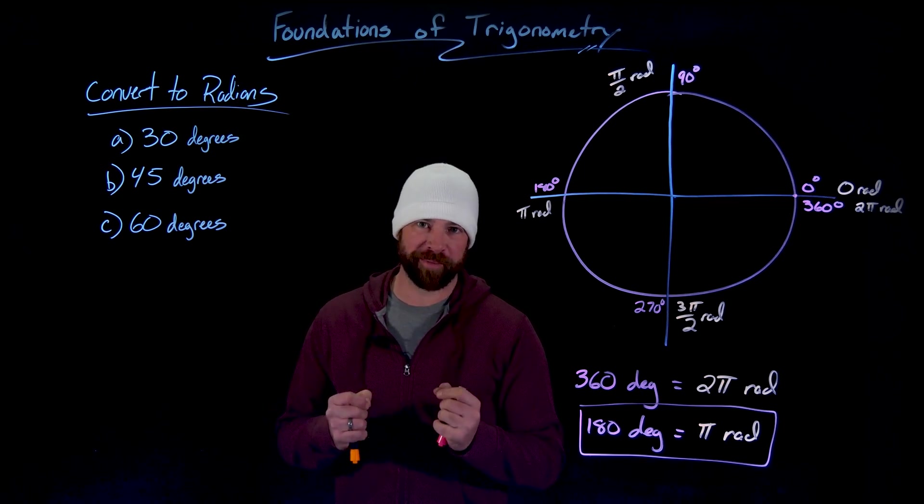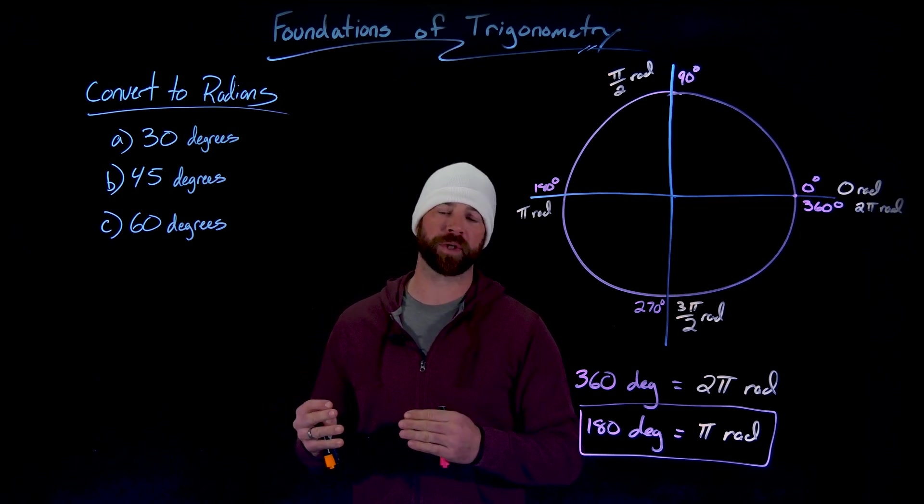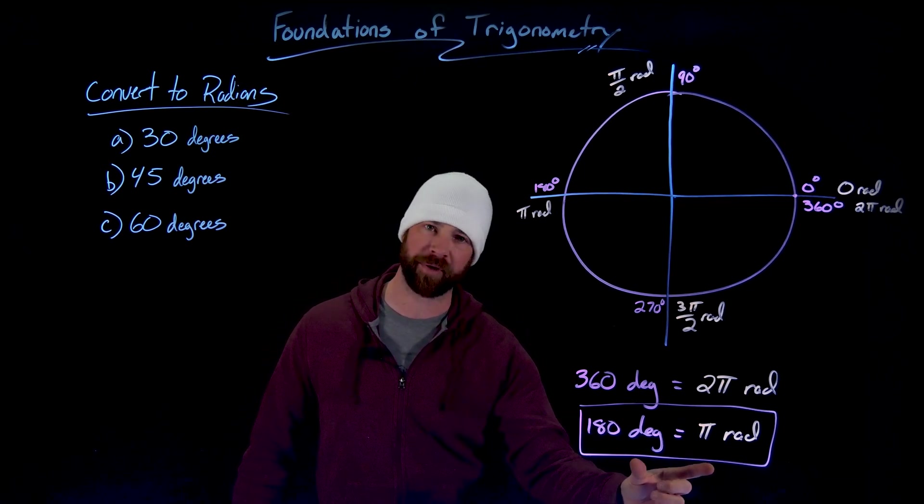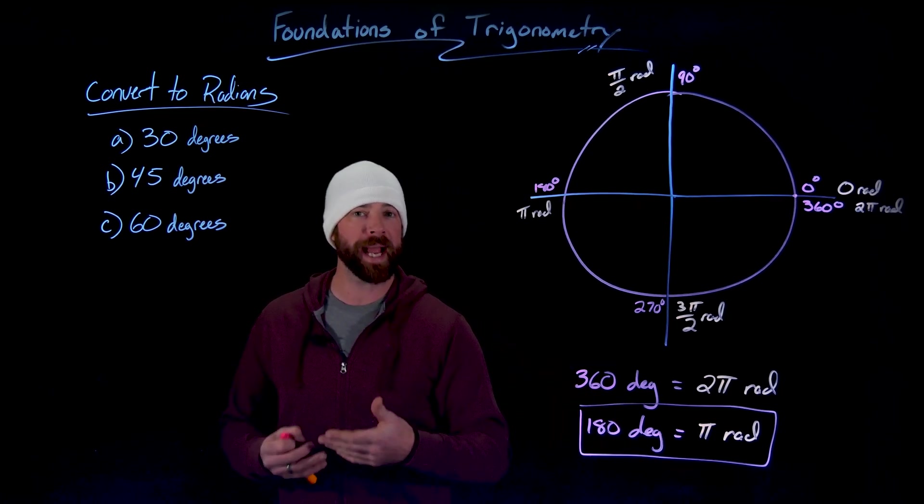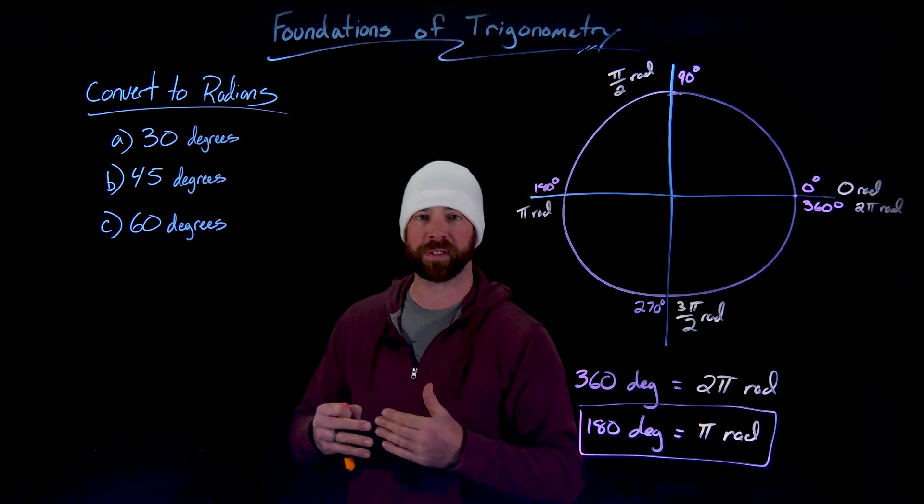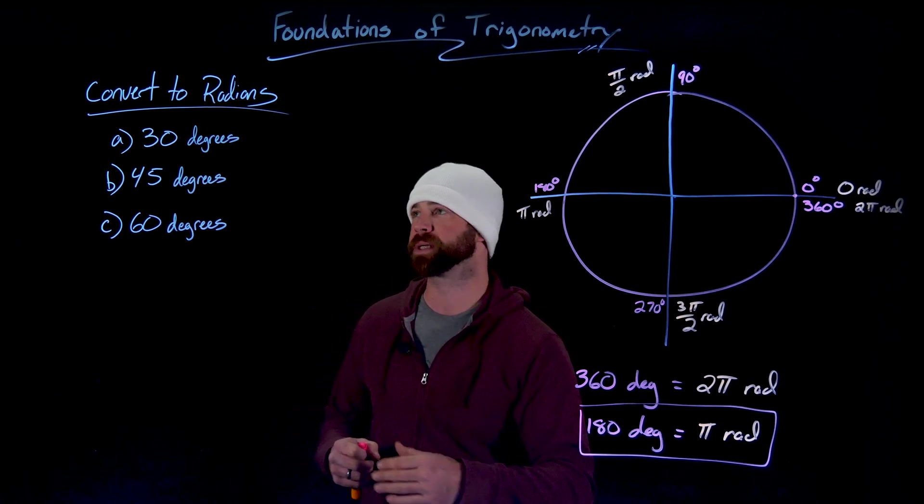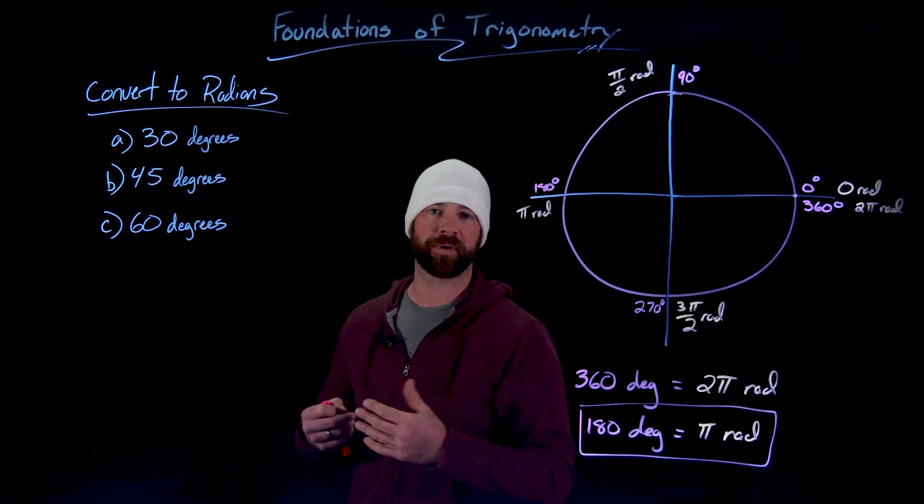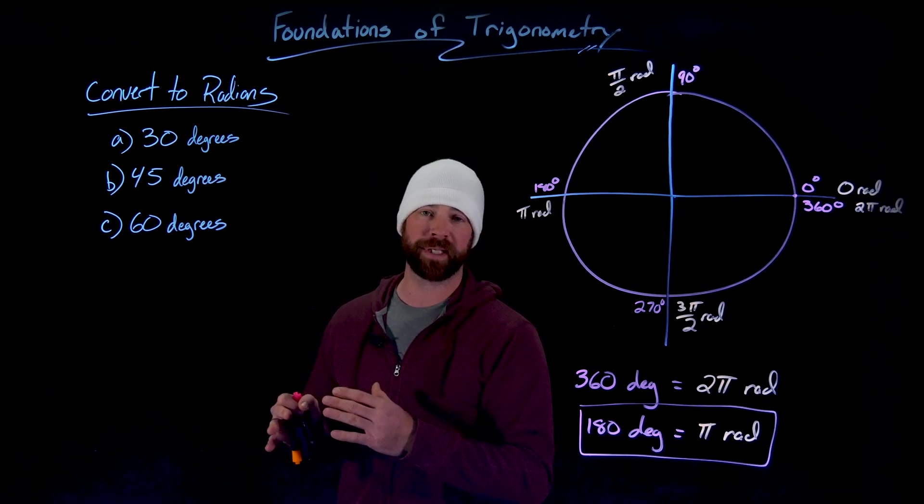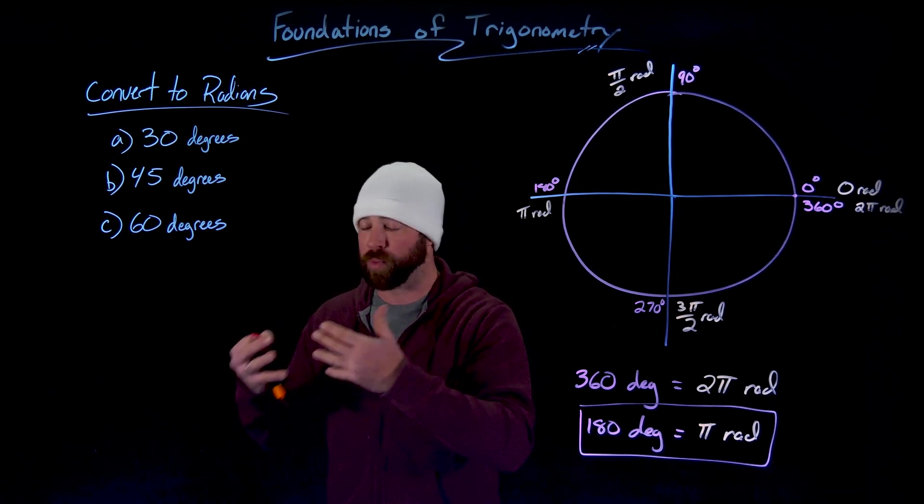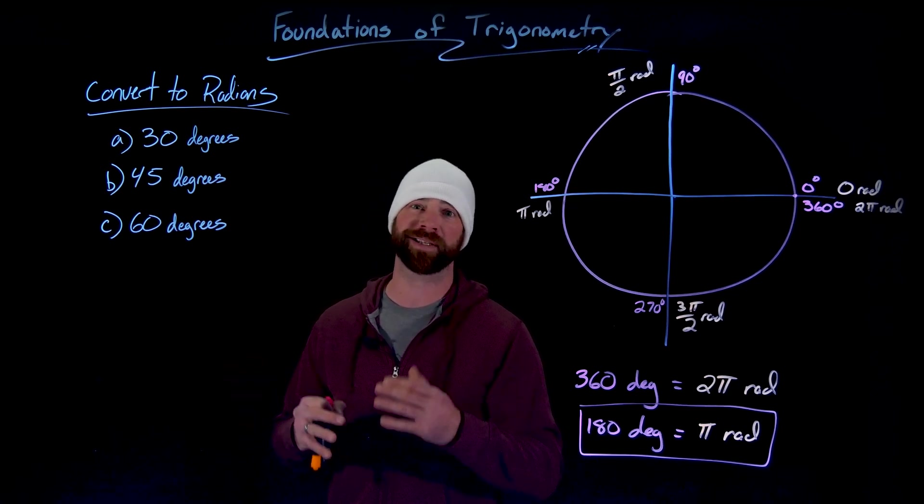Right out the gates, you're going to find that it's really important that we know how to convert between degrees and radians. All we need is this conversion rate right here where 180 degrees equals pi radians and a simple understanding of dimensional analysis or how to convert between different units. In this case right here, we're going to convert 30 degrees, 45 degrees, and 60 degrees into radians.